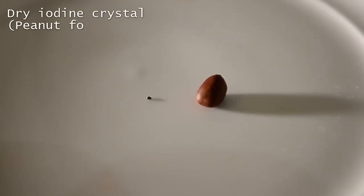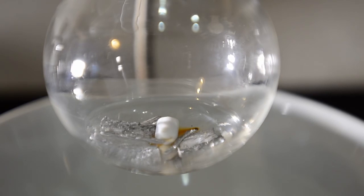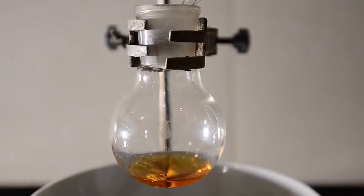Then we got a tiny crystal of dry iodine, there's a peanut here so you can see the scale of this. We put the iodine into the flask with the ether and magnesium turnings. Then we added a small amount of the methyl iodide in ether solution.